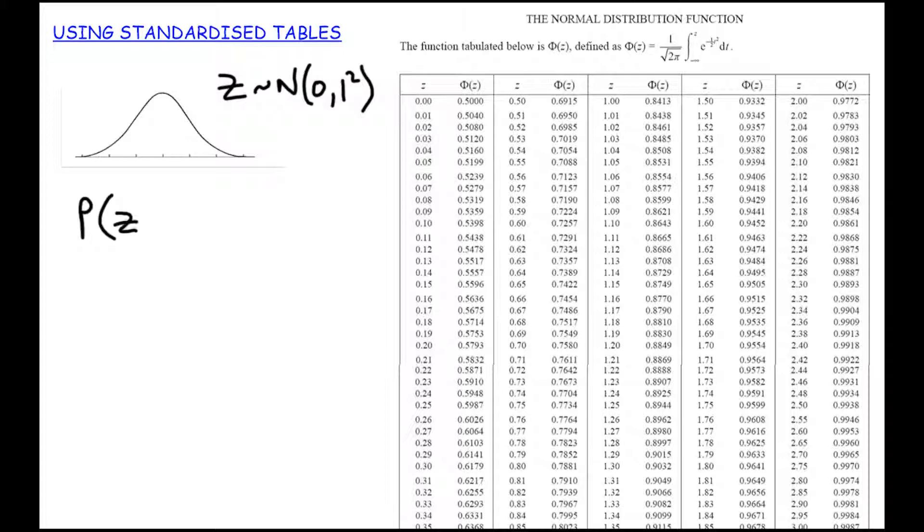What is the probability that Z is less than 0? This is the mean plus no standard deviations. We should now be comfortable with the fact that the probability less than the mean is going to be 0.5. What about the probability that Z is less than the mean plus 1 standard deviation?